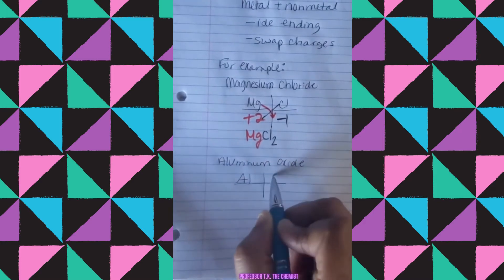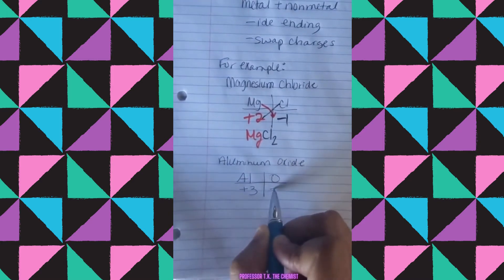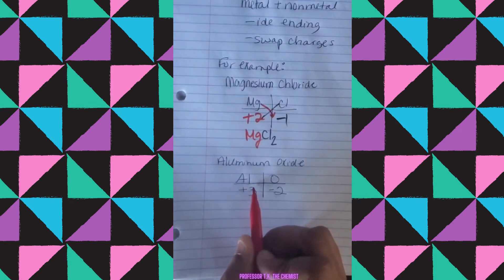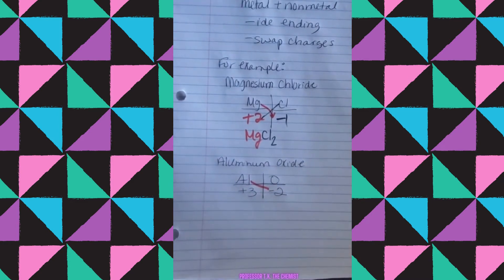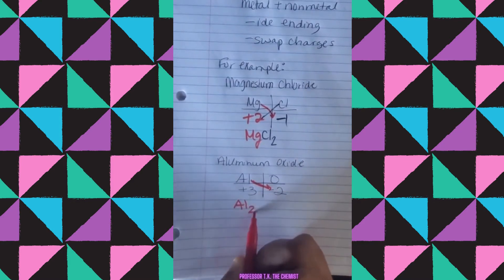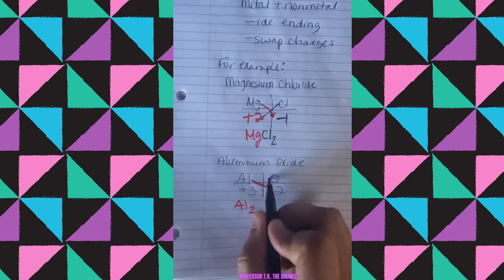Let's get into the next example. Aluminum and oxygen. Aluminum has a plus three charge. Oxygen has a negative two. Swap those charges. Aluminum takes the two and oxygen takes the three. Al2O3.